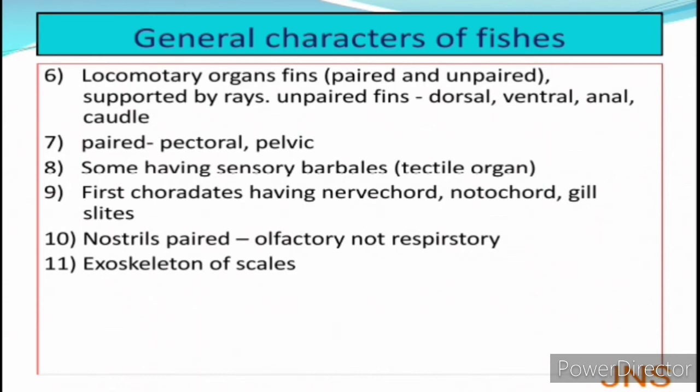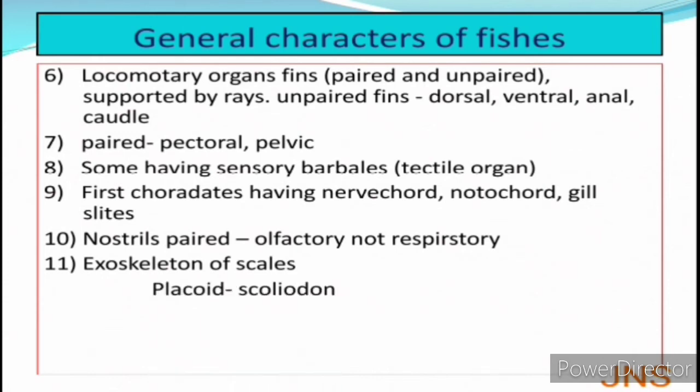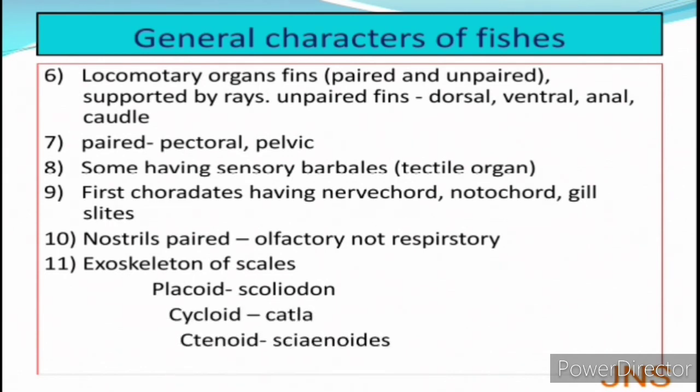The body is covered by scales. The scales are basically of three types: placoid scales, cycloid scales, and ctenoid scales. Placoid scales are found in elasmobranch fish species, while cycloid and ctenoid scales cover the surface of other fish.